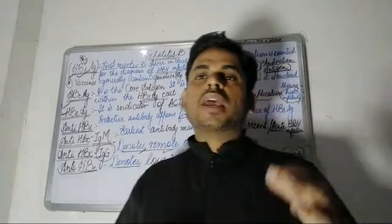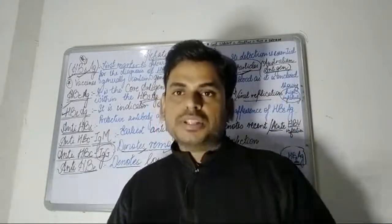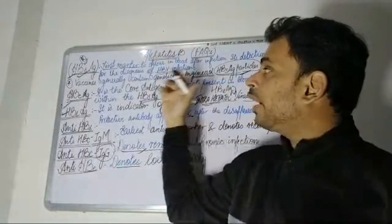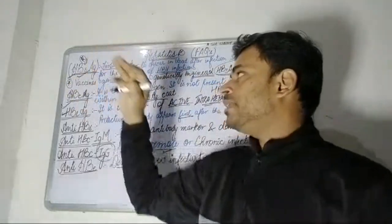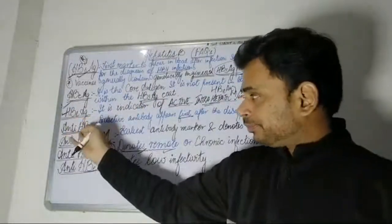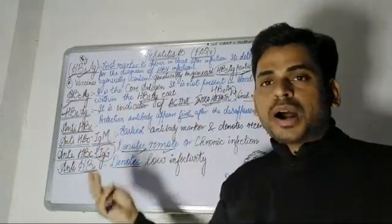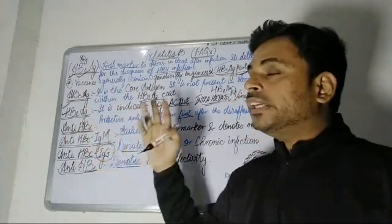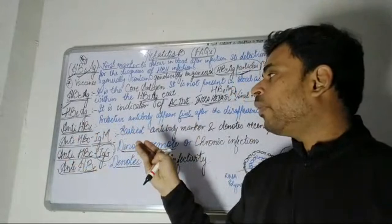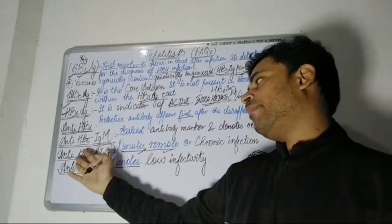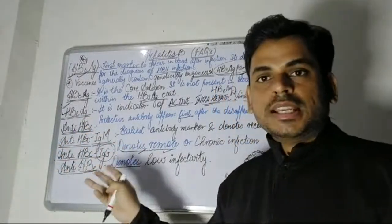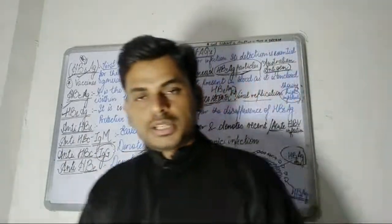These were the very frequently asked MCQs in NEET PG and other competitive entrance exams. Questions on Hepatitis B virus may come from HBsAg, HBcAg, HBeAg, and their corresponding antibodies. To summarize: anti-HBc IgM indicates acute infection, and anti-HBc IgG indicates chronic infection.